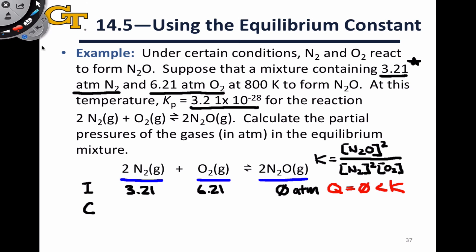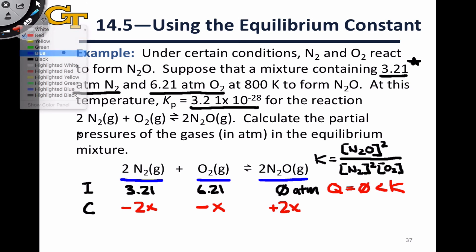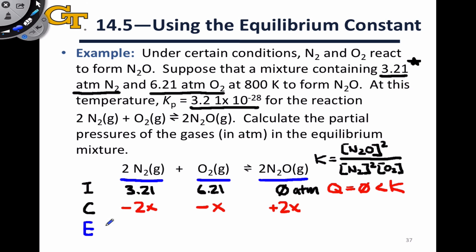From that, we can get the changes, at least the signs of the changes. We're going to get plus 2x, where I'm inserting the 2 because of the 2 here in the balanced chemical equation. We're going to get minus x for O₂ and minus 2x for N₂. And now at this point, we can write the equilibrium line simply as the sum of the two: 3.21 minus 2x for nitrogen gas, 6.21 minus x for oxygen gas, and for N₂O, simply 2x at equilibrium.